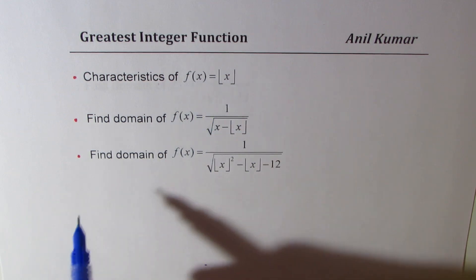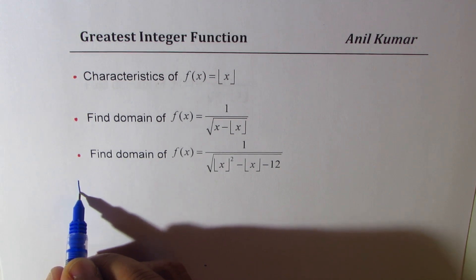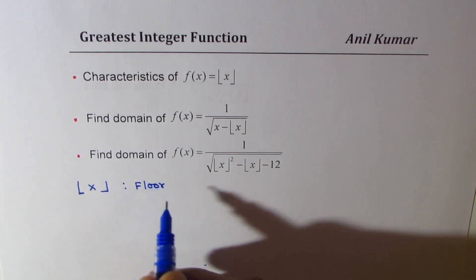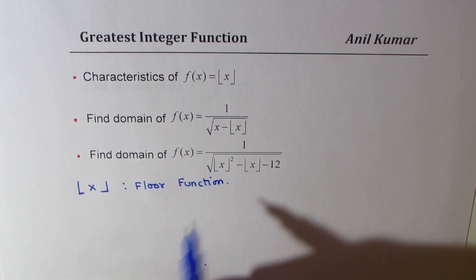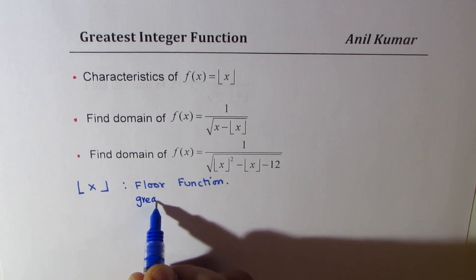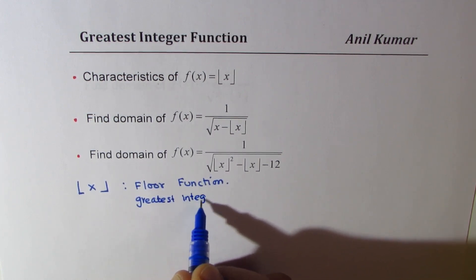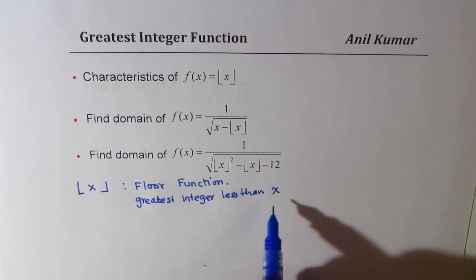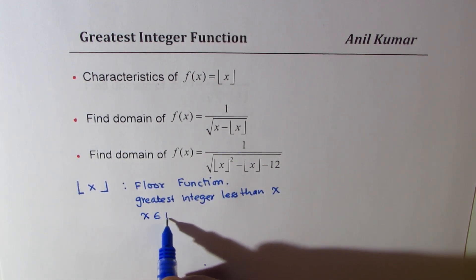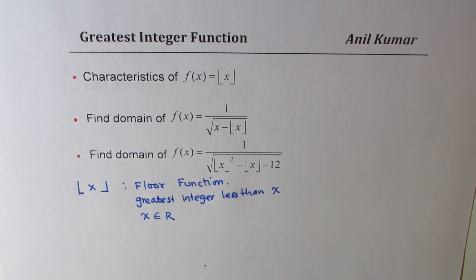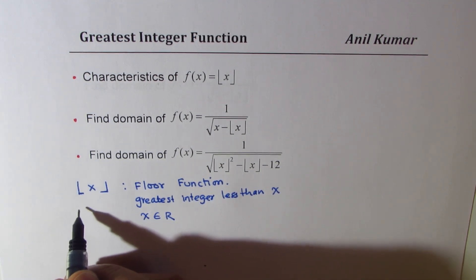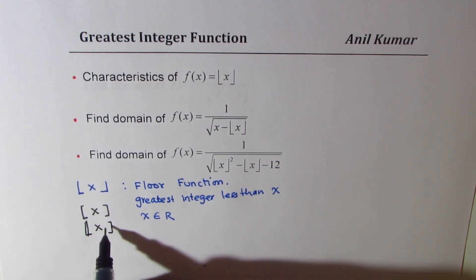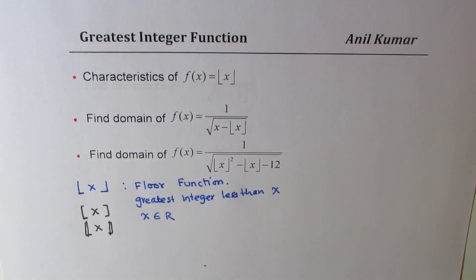The greatest integer function is written in two different ways. One uses this bracket notation — you see it indicates we take a lower value, so it is also called the floor function. Basically it is the greatest integer less than the value of x, where x belongs to all real numbers. At times we also write this function as square brackets, or sometimes as double bars. All are the same symbol — they all represent the greatest integer function.